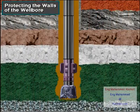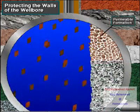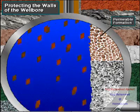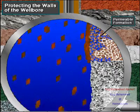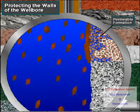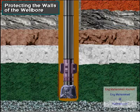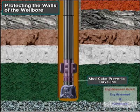Mud stabilizes the hole and keeps it from caving in. As mud moves up the hole, it usually flows by permeable formations — those that allow fluid to flow. When the mud is next to a permeable formation, pressure forces the liquid part of the mud, the filtrate, into tiny openings or pore spaces in the formation. This leaves behind a thin sheath of solid particles known as mud cake. These solids plaster the side of the hole, much like the plaster on the wall of a building. The wall cake helps keep the hole from caving in.